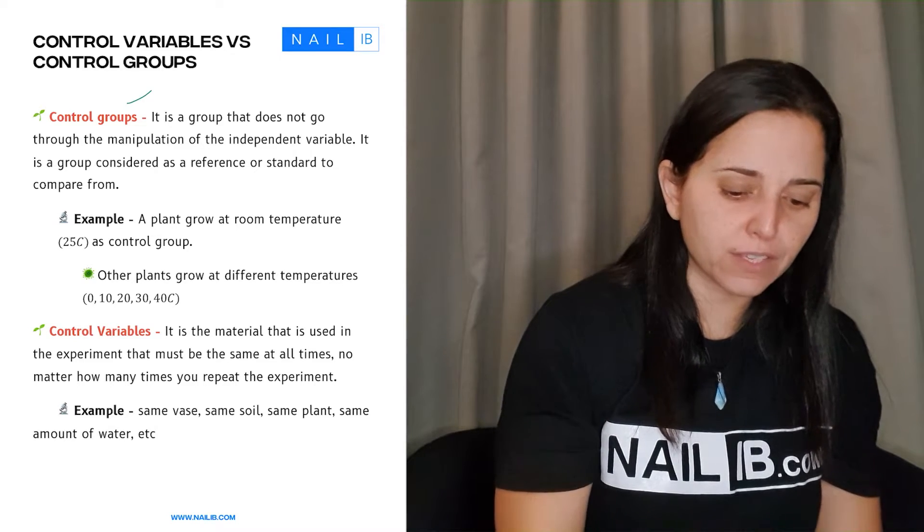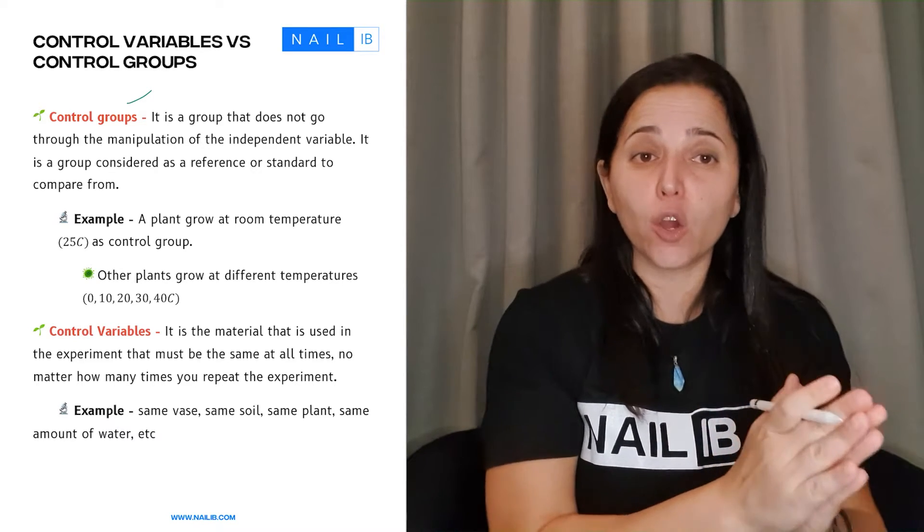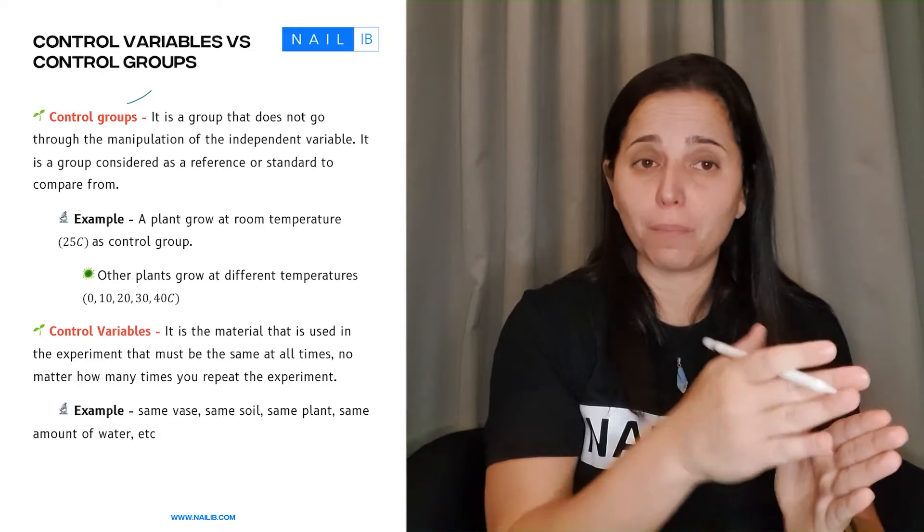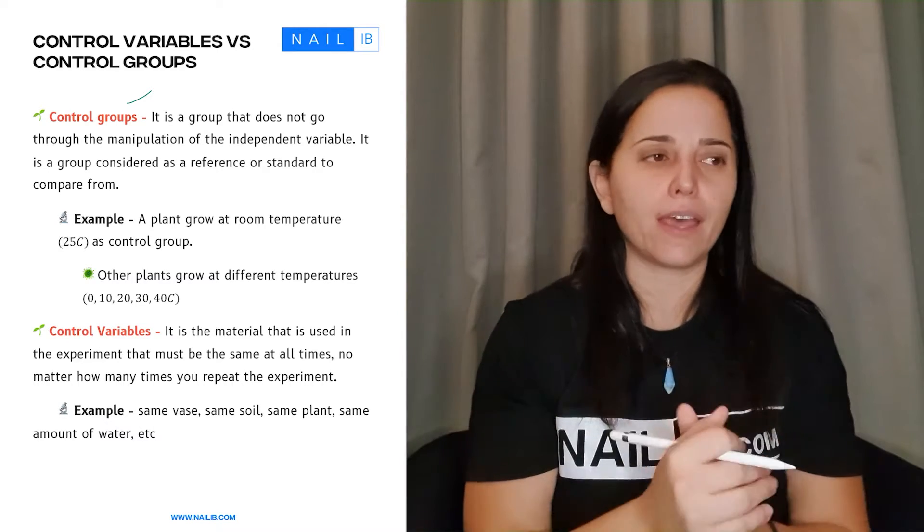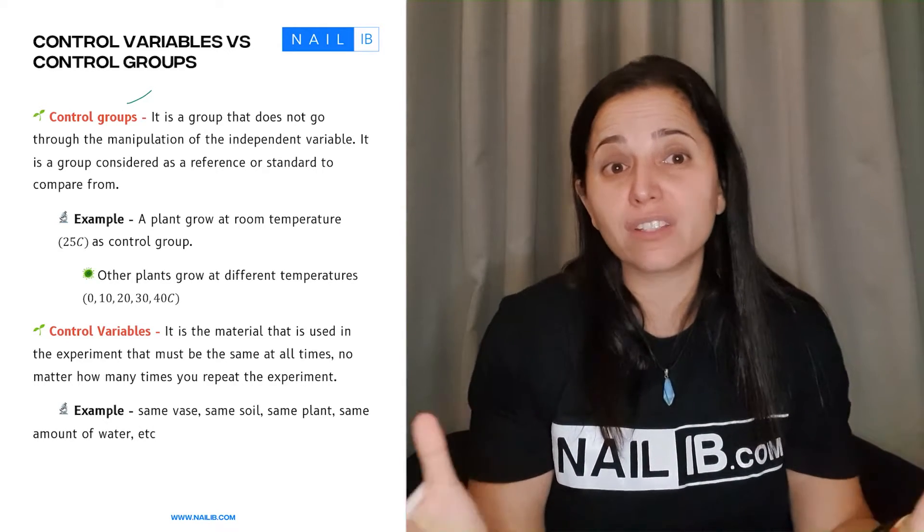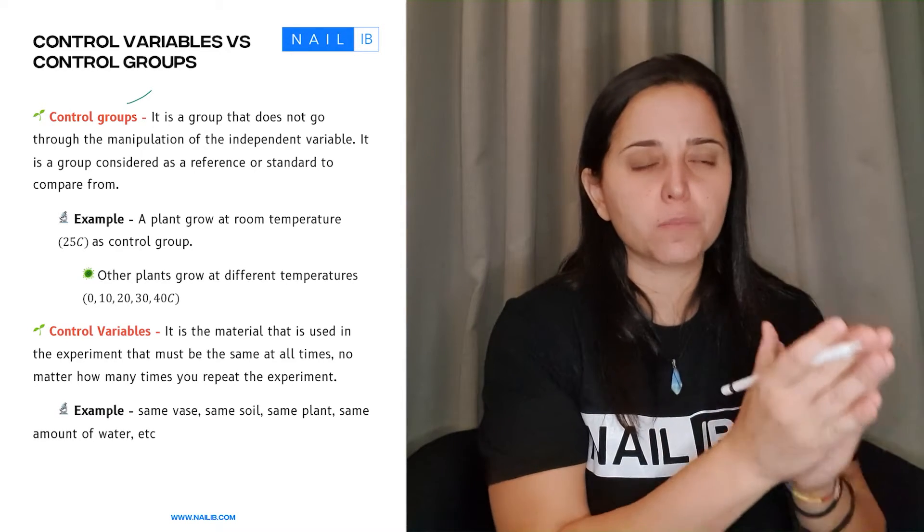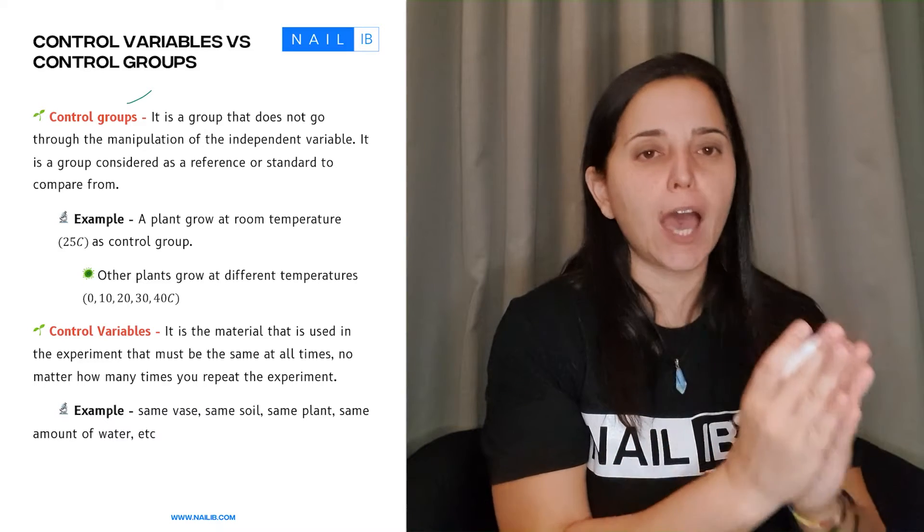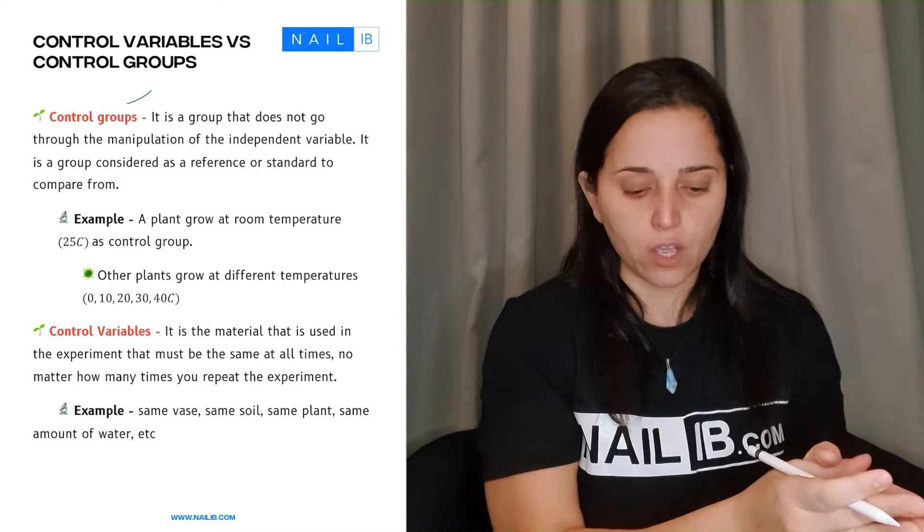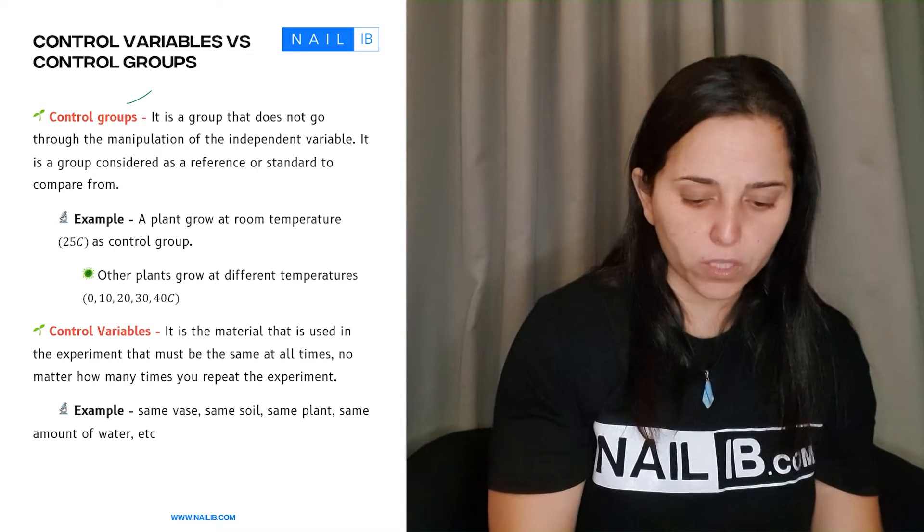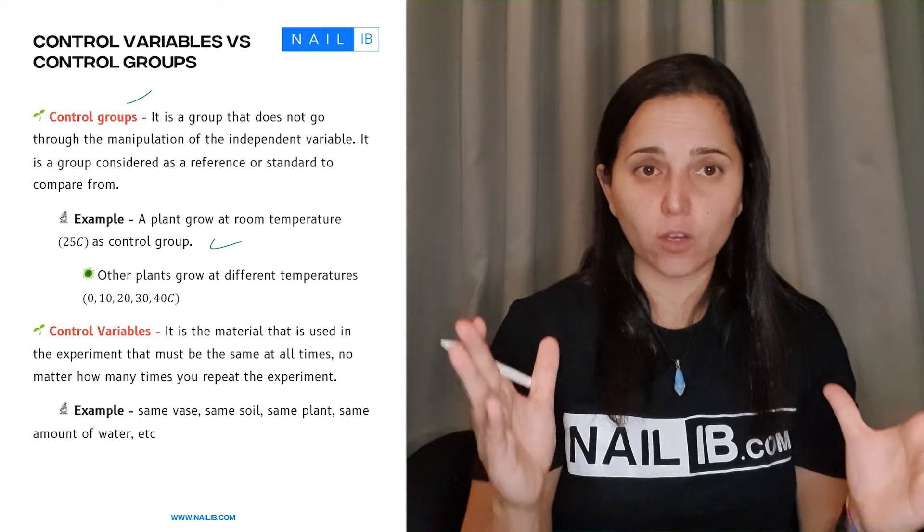When we say control groups, that's a group that is not going to go through the process of being manipulated by the independent variable. What I mean by that, let's say you want to play with the pH or the temperature. There will be one group that will not be played; they will stay in a specific temperature that will not be used as a manipulation. So for example, you can see a plant grow in room temperature of 25°C. That's a control group.